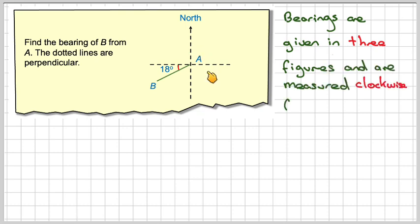So if we start from north, we need to go all the way round to here. On the diagram, it's a good idea to mark on the bearing that we actually want to find.